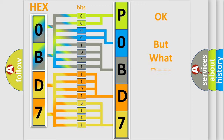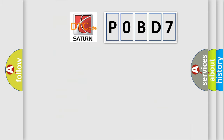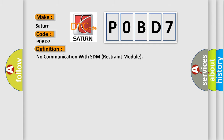We now know how the diagnostic tool translates the received information into a more comprehensible format. The number itself does not make sense to us if we cannot assign information about what it actually expresses. So, what does the Diagnostic Trouble Code P0BD7 interpret specifically for Saturn car manufacturers? The basic definition is: No communication with SDM Restraint Module.